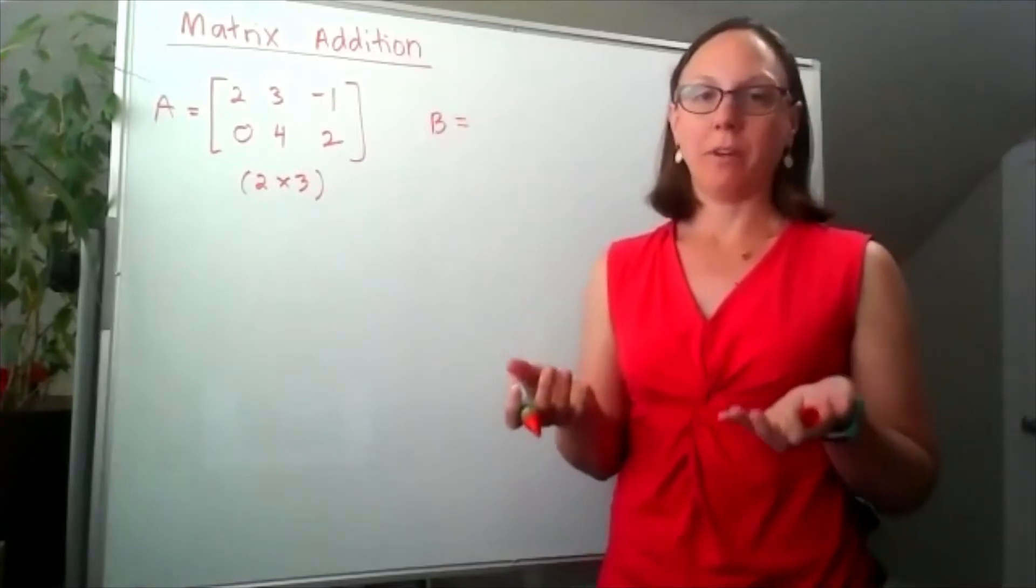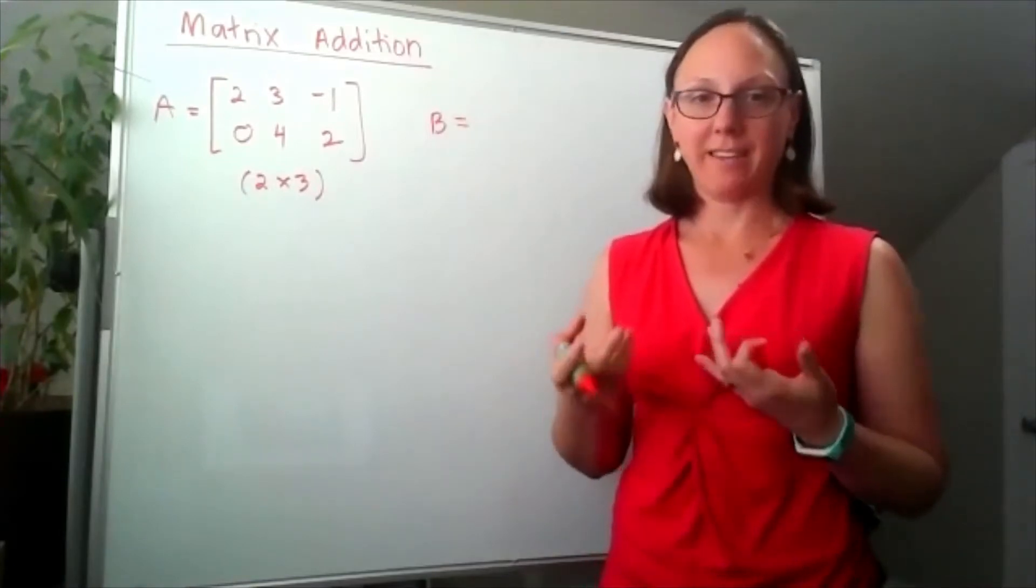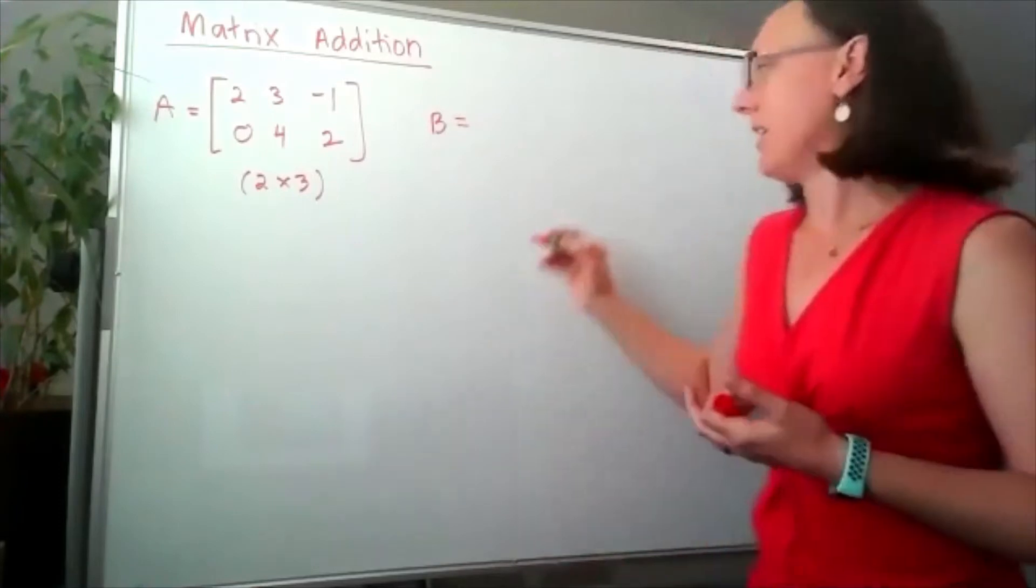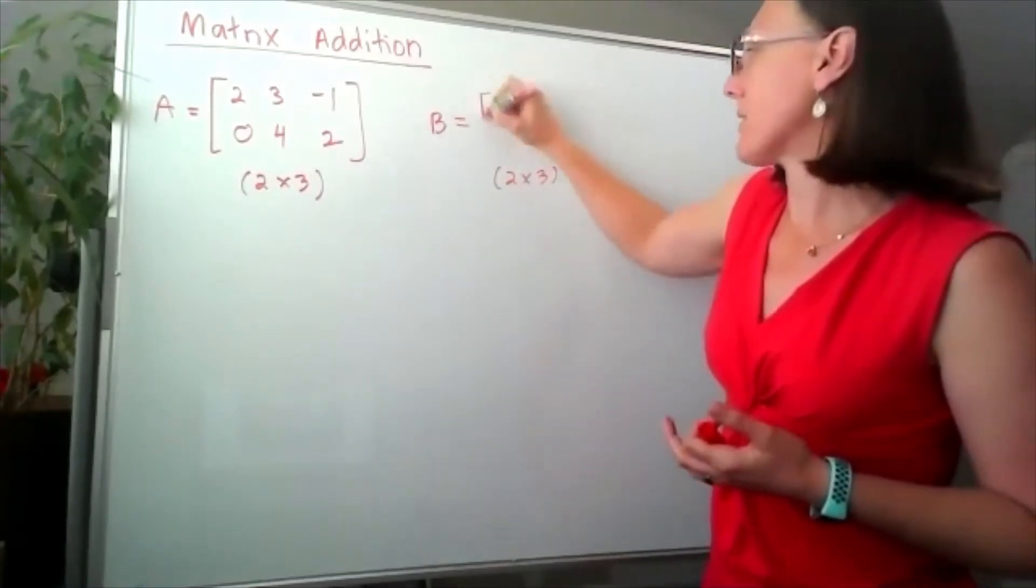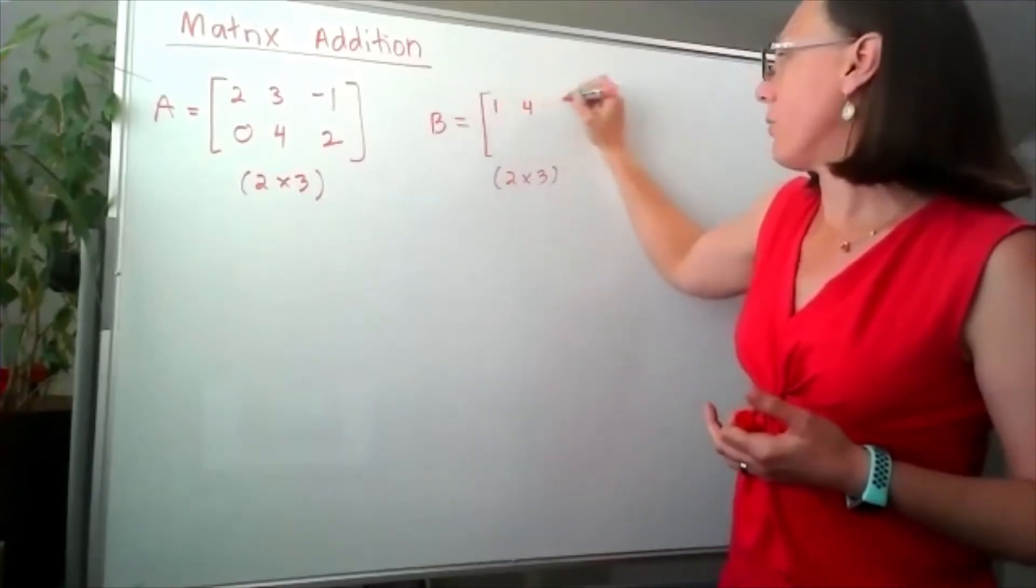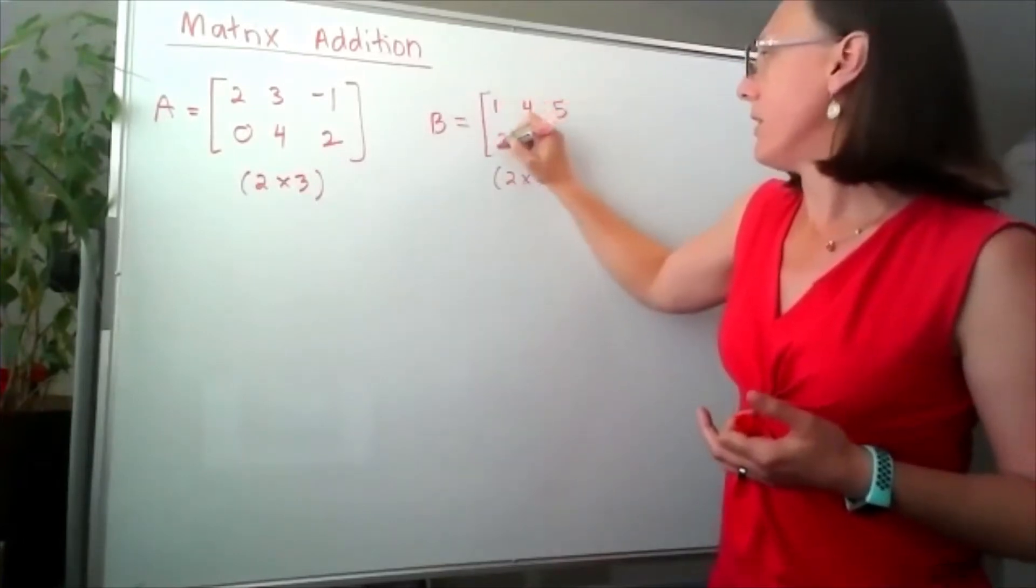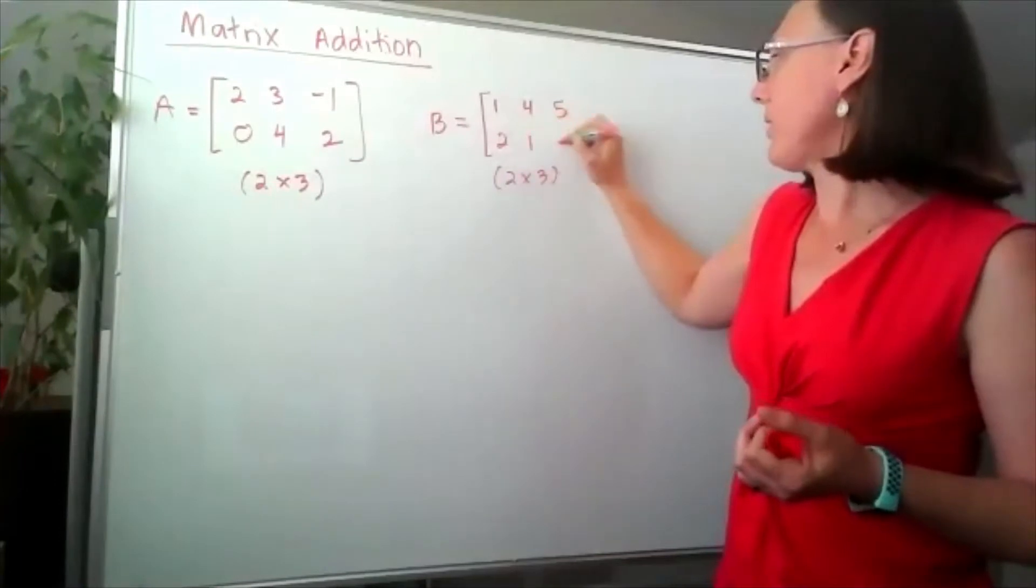If I want to add two matrices, they have to be exactly the same dimensions. So if I make another 2 by 3 matrix, let's go 1, 4, 5, 2, 1, 1.